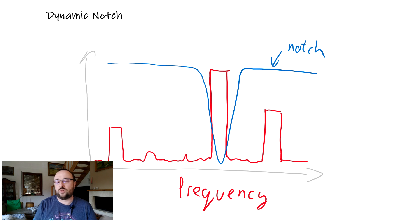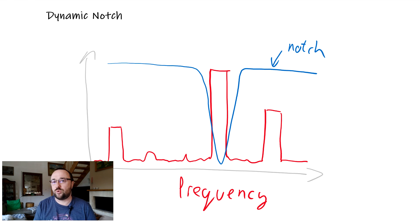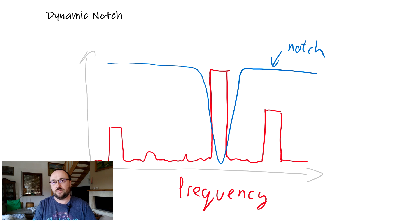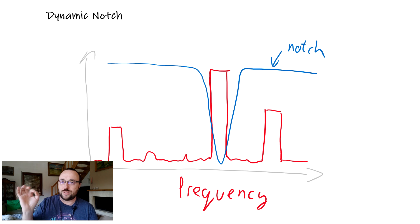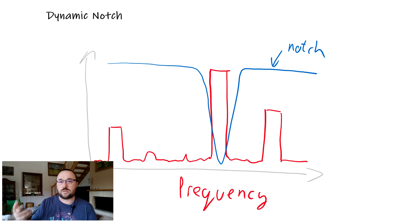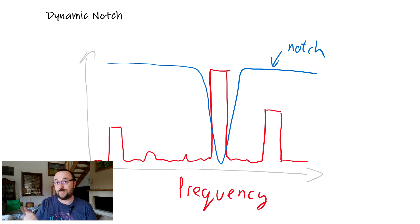Usually that comes from either a motor, a propeller — almost the same — or for example frame resonance. The most distinguished peak inside the frequency domain means that there is something noisy at that exact frequency. This is step one, and this is what the gyro analysis part of all the main softwares — Betaflight, INAV, and ImmutableFlight — is doing.